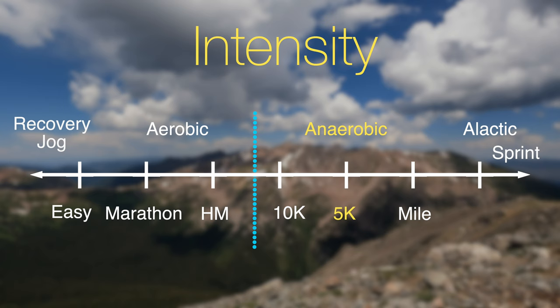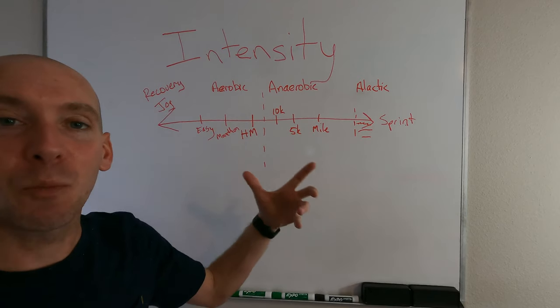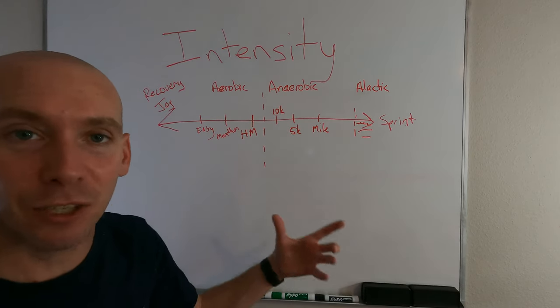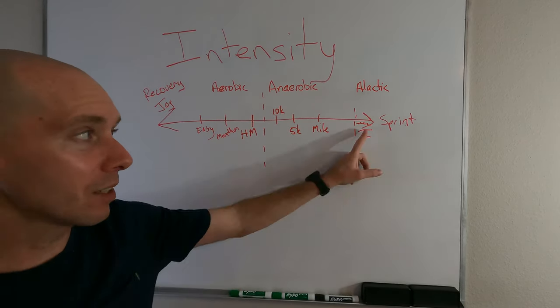Then we have your 5K pace and your mile paces. We get shorter and shorter in distance as we get closer to the right side of the spectrum. The more anaerobic, the more intense, the faster these paces get.